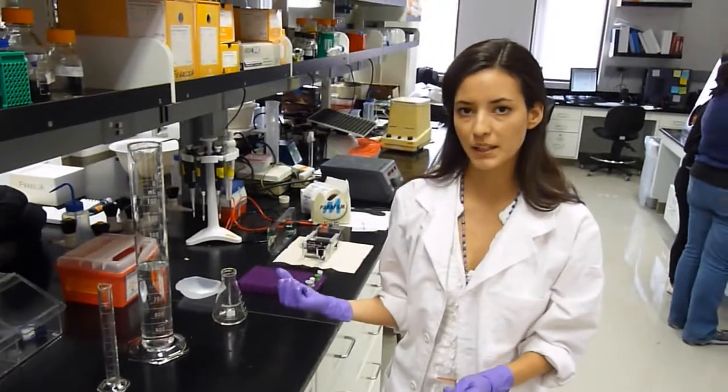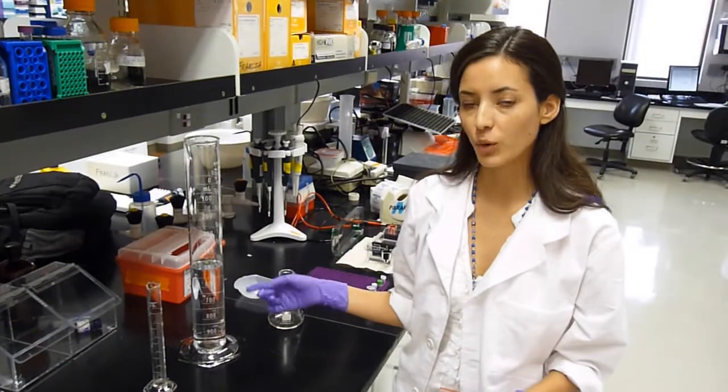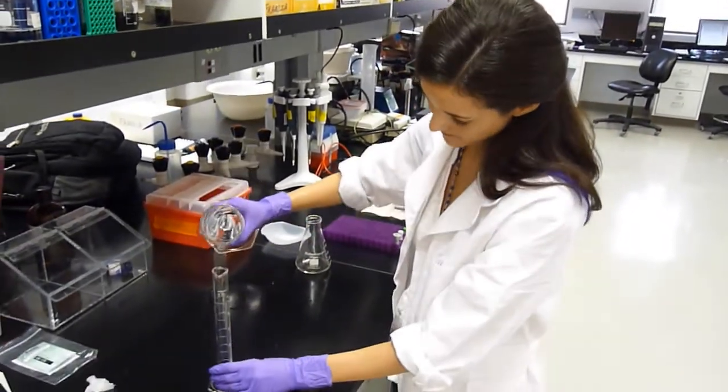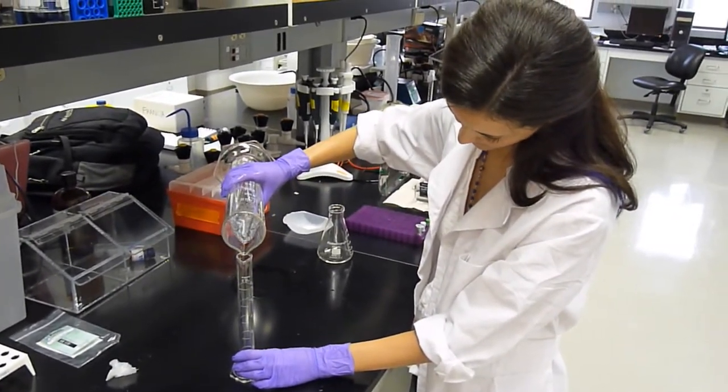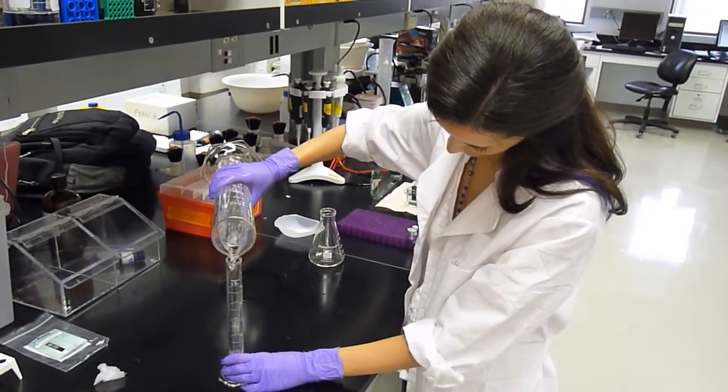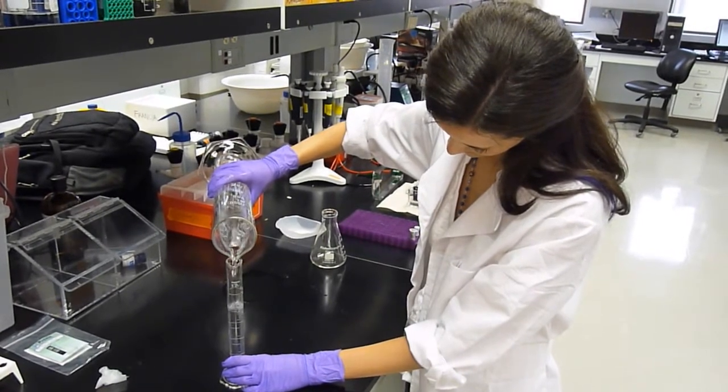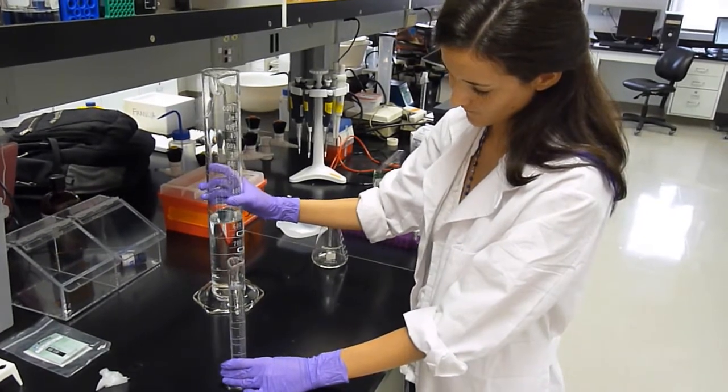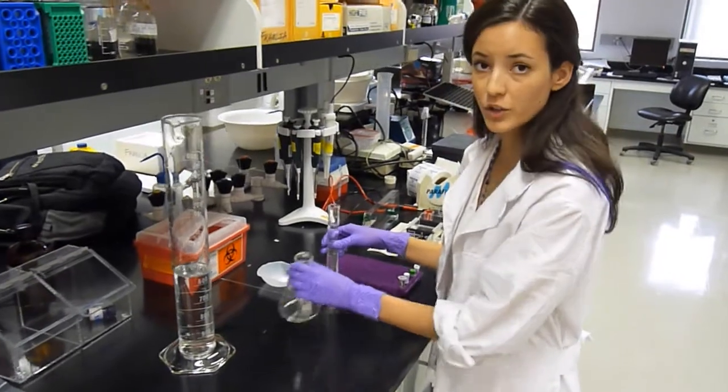Since the volume that we need is 50 ml, you want to measure out 50 ml of your 1 times TAE. Then you want to pour that into your Erlenmeyer flask.